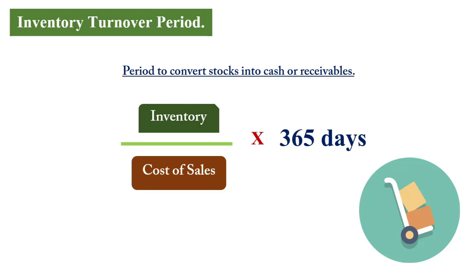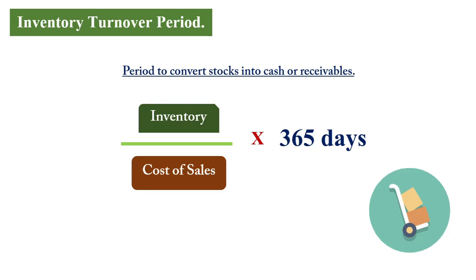If the inventory turnover period is shorter than the comparative figure, that is a good position for the business. If it is higher, you would need to find out whether a large consignment was bought in anticipation of a major contract or to stock up ahead of a scarce period.